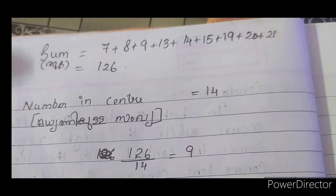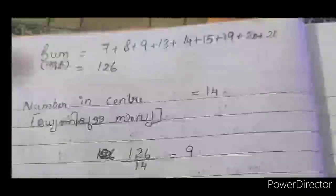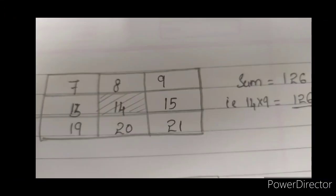Now, what we have in mind is 126. The center number is 14, and the sum is also 9 times 14. So the sum is 126, which equals 9 times the center number 14. That means the total equals 9 times the center.